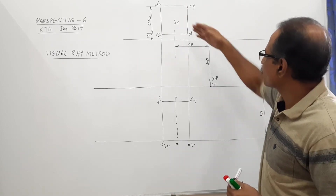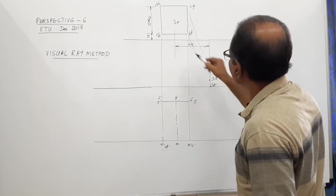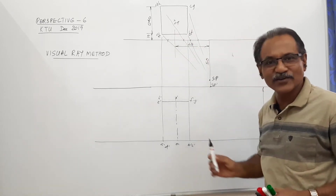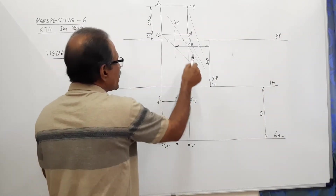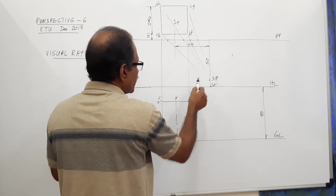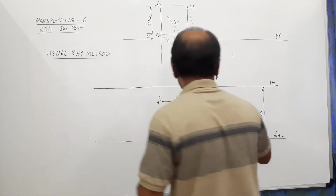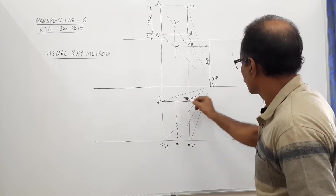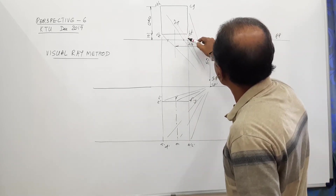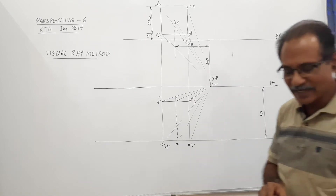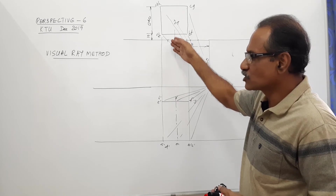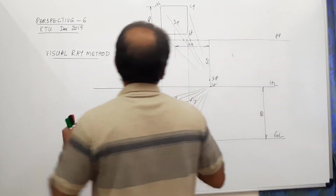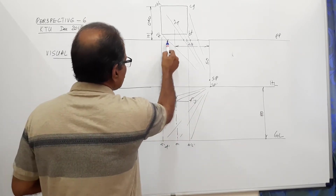Now draw visual rays from all points of the plan to SP, and join all points in the elevation to SP dash. The intercept from the PP is dropped to the line by connecting the elevation to SP dash. For example, this is point A — find the intercept of A on PP from the plan ray to SP, then drop it down to the corresponding ray from A dash to SP dash to get capital A.